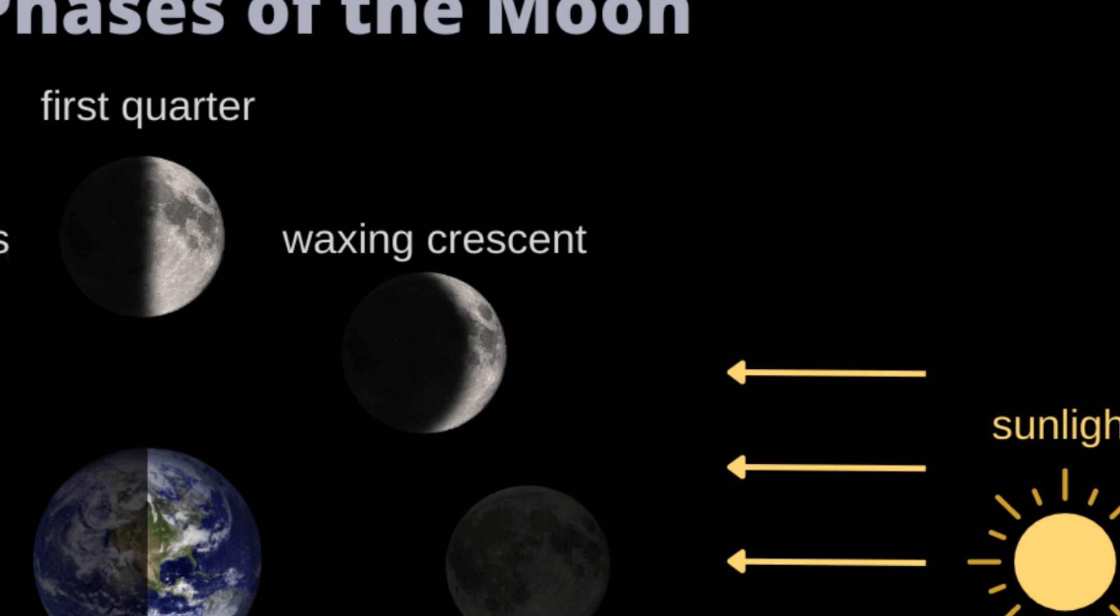Waxing crescent. As the moon moves in its orbit, a sliver of light begins to appear on the right side. This is the waxing crescent phase. Waxing means increasing, so the illuminated part is growing.